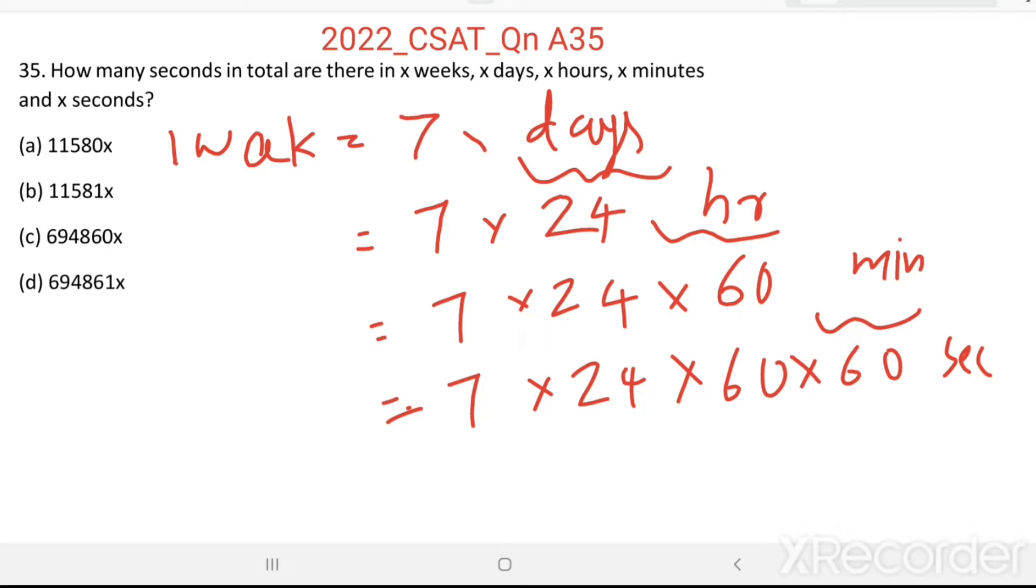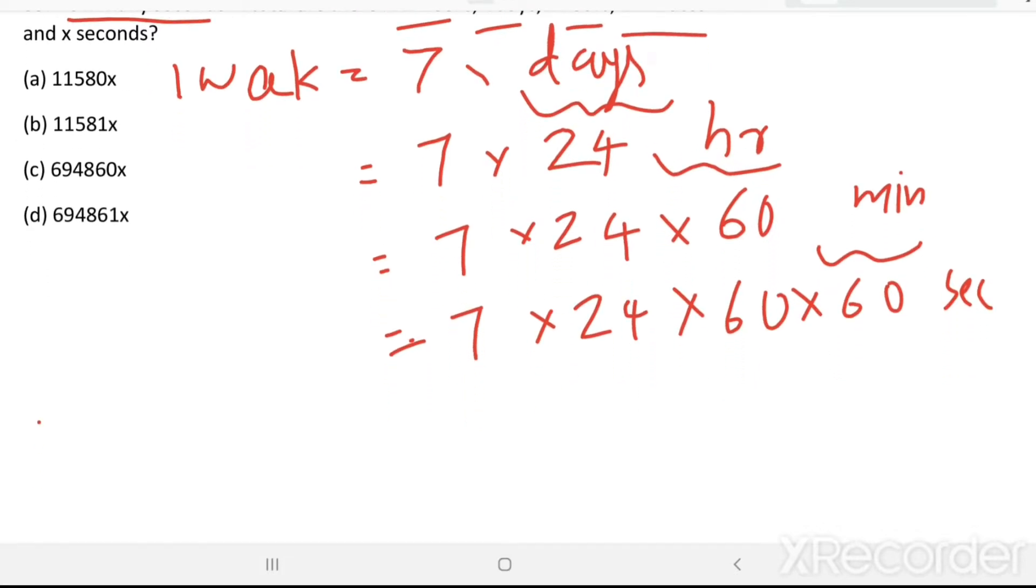Now, we want to find how many seconds are there in total in X weeks, X days, X hours, X minutes. X week equal to 7 into 24 into 60 into 60 equal to 3600 seconds.